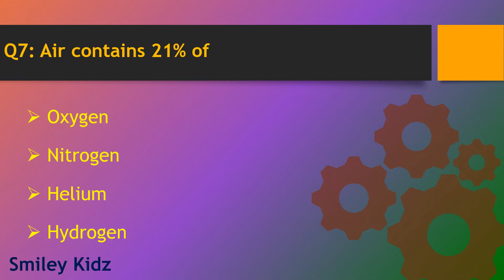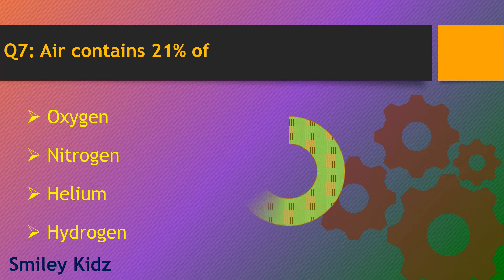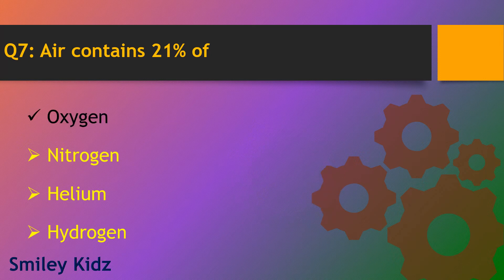Question number 7. Air contains 21% of which gas? Options are oxygen, nitrogen, helium and hydrogen. The right answer is oxygen. Air contains 21% of oxygen.